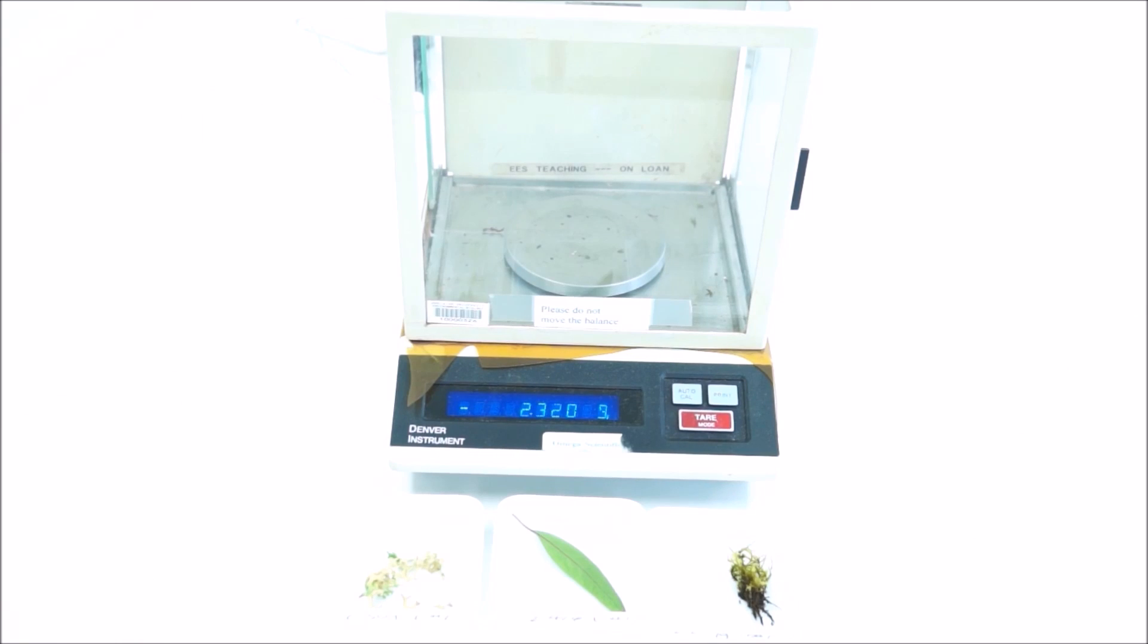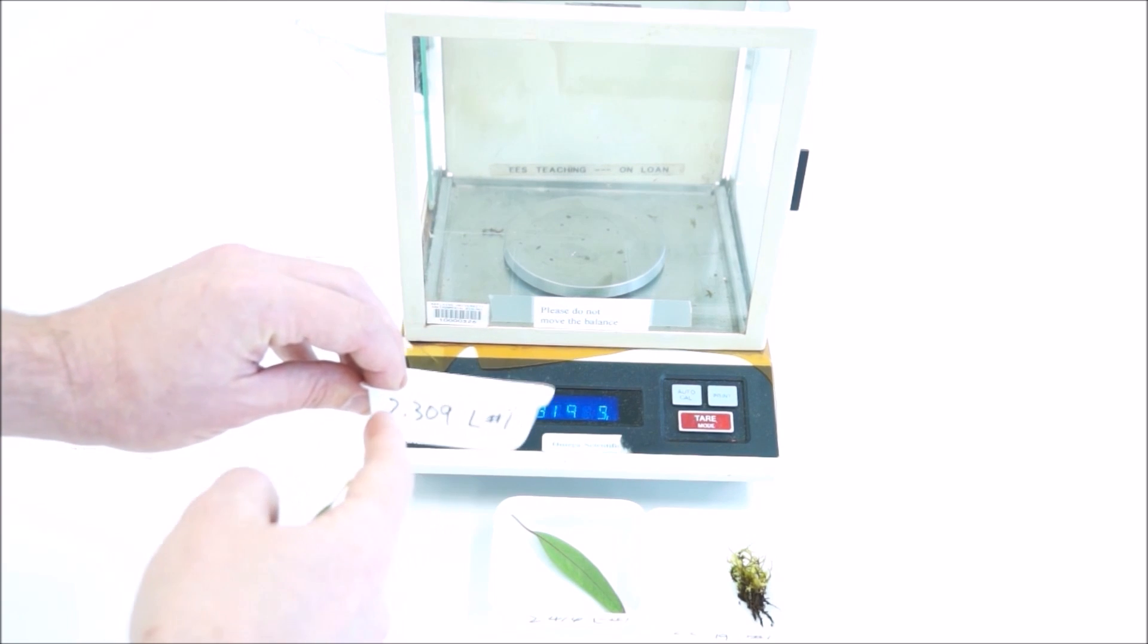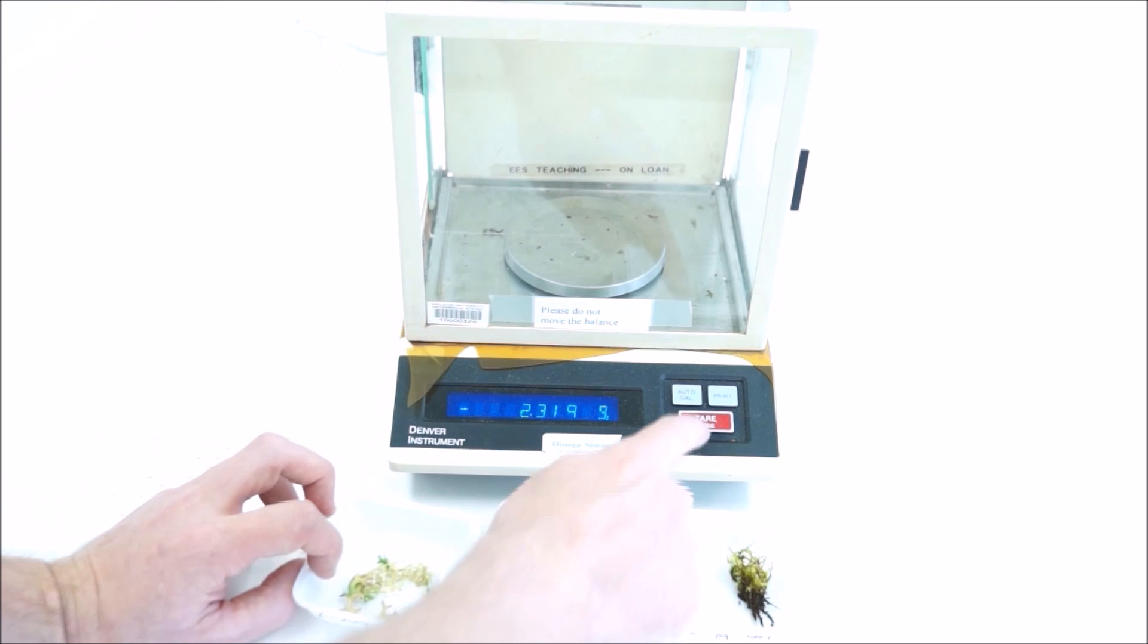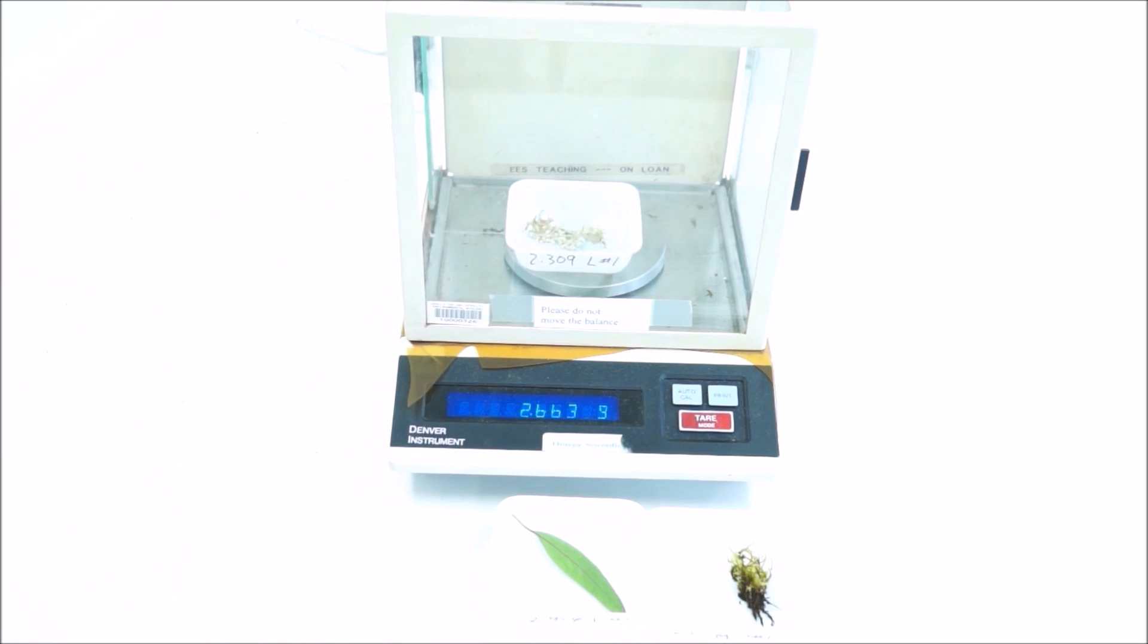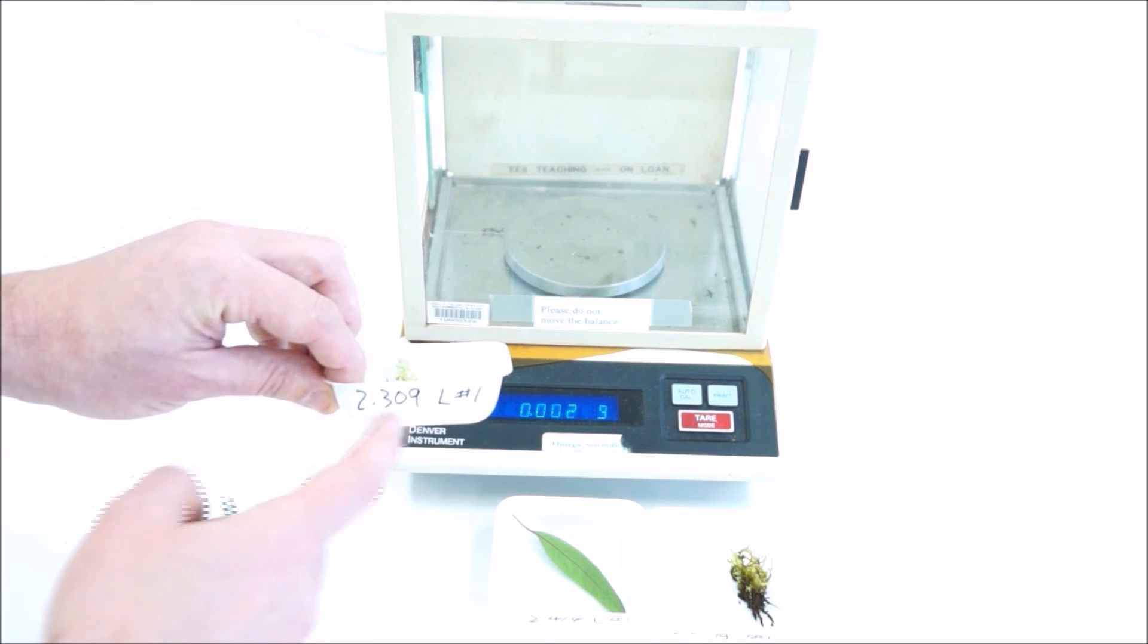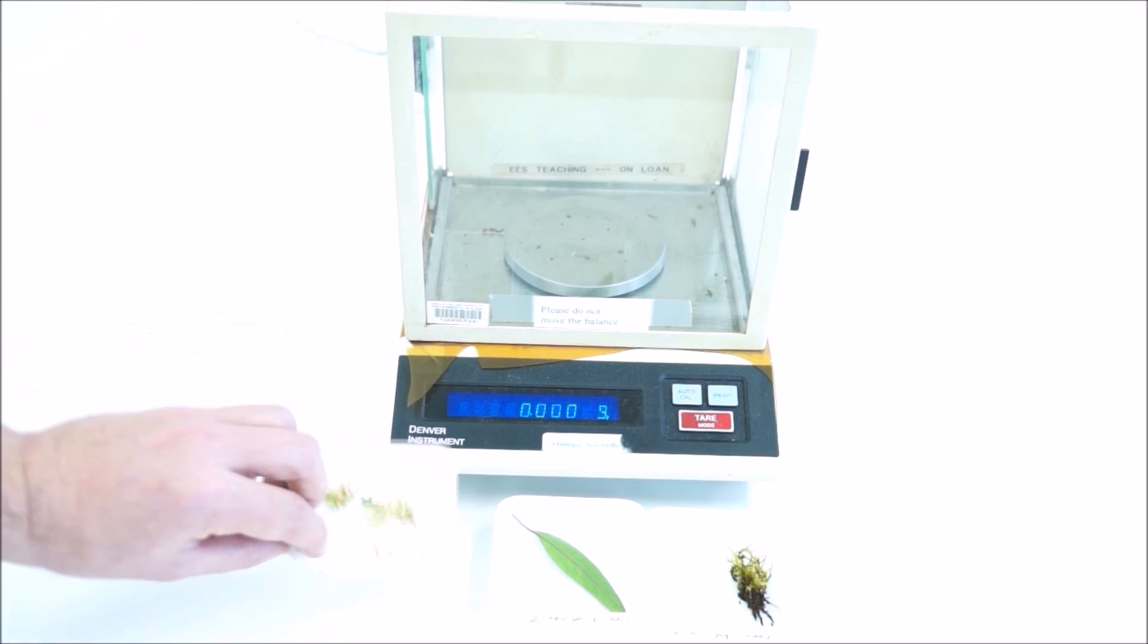You want to take your first measurement as soon as you set your samples up, and so this is lichen number one. The dish is 2.309 grams. Remember to zero your scales first up and then put them in. Wait for it to stop moving around. That's 2.751, and you can minus that number from your tray number—that's how much the lichen weighs.